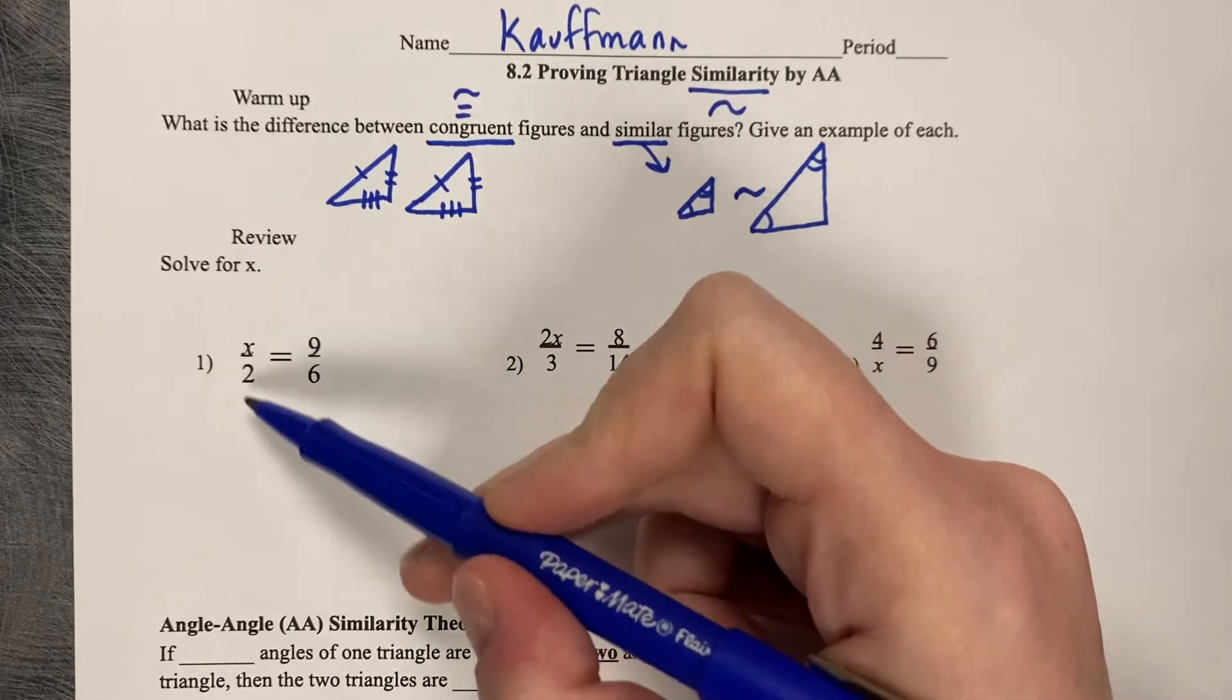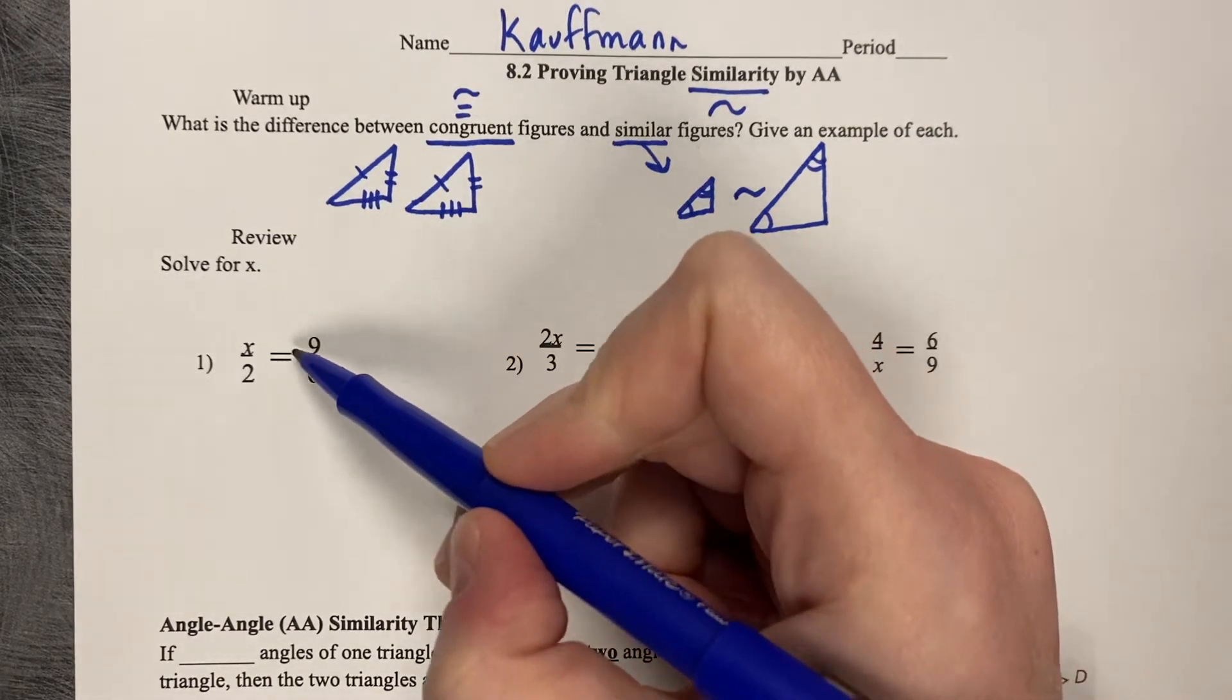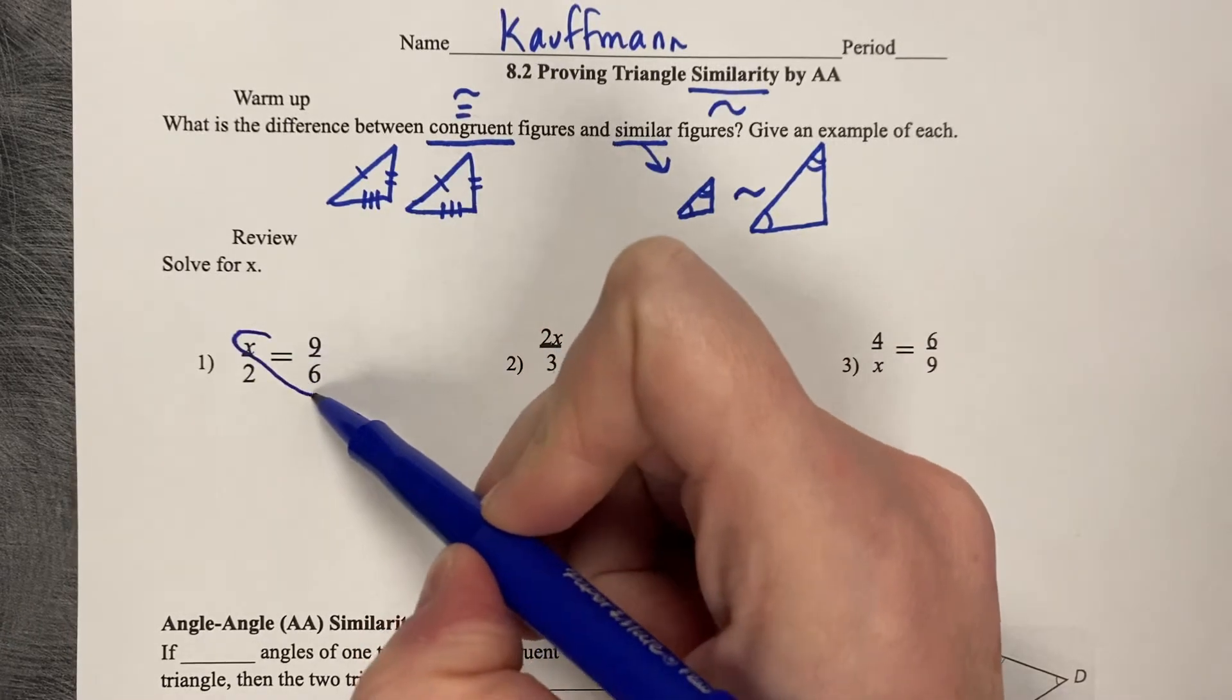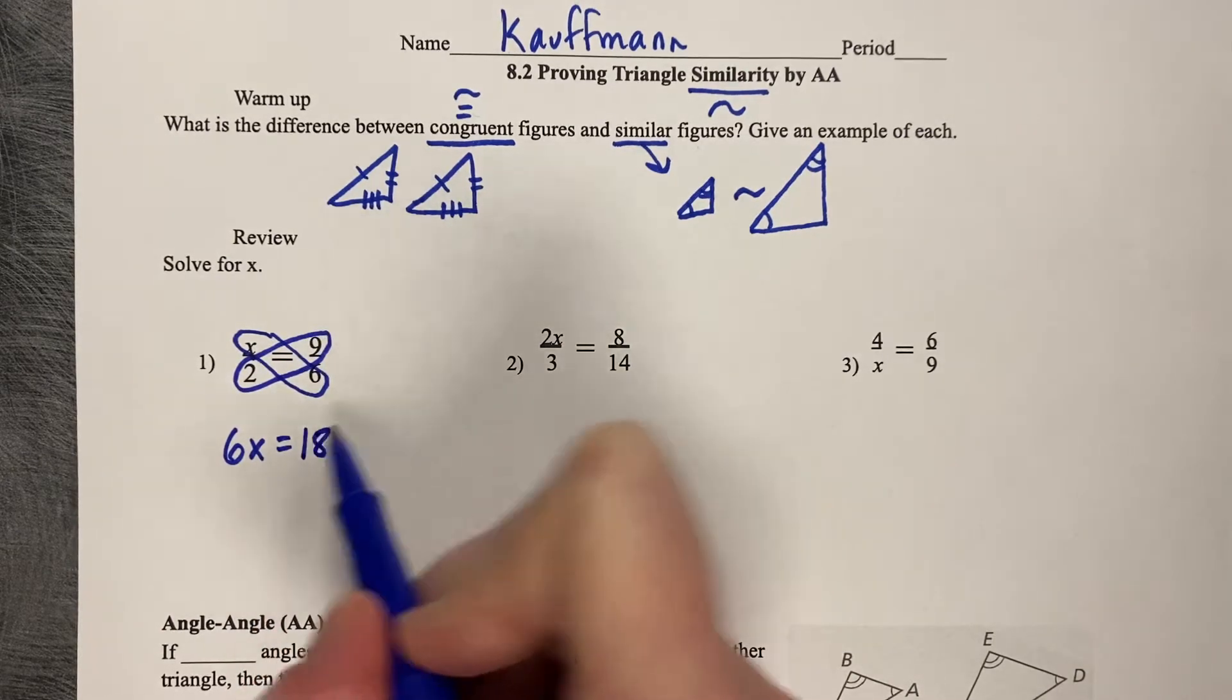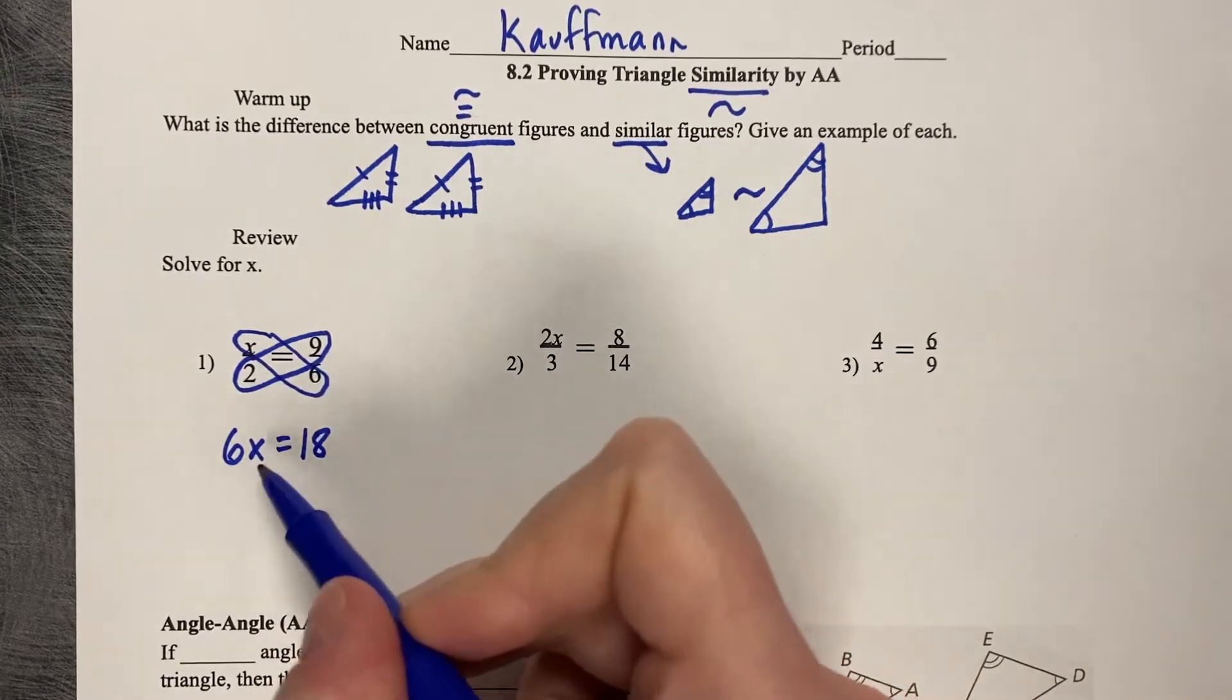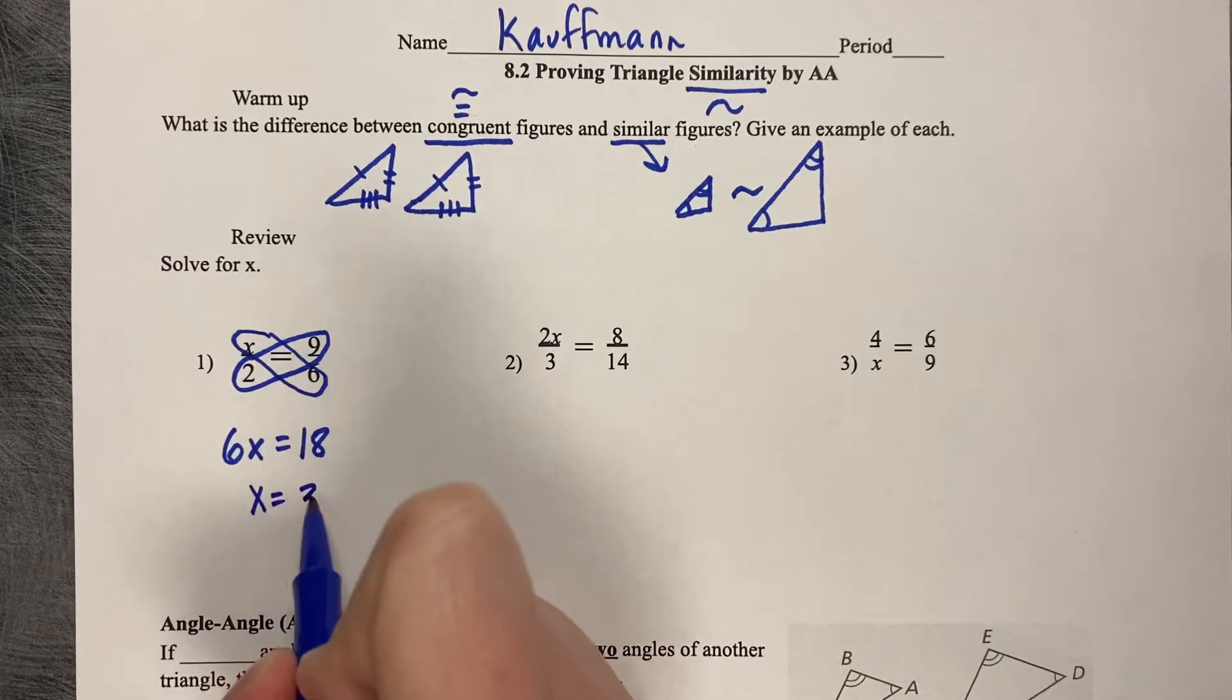When we're doing similarity work, we're going to be setting up a lot of what's called proportions and solving. So there's a couple different ways that you can solve them, and this is just a review. So one way to solve it is to use what's called cross multiplication. So you would do x times 6, or 6x, and 2 times 9 equals 18. And then because you had a fraction equal to a fraction, now you've got just a regular equation. Divide by 6, and x equals 3.